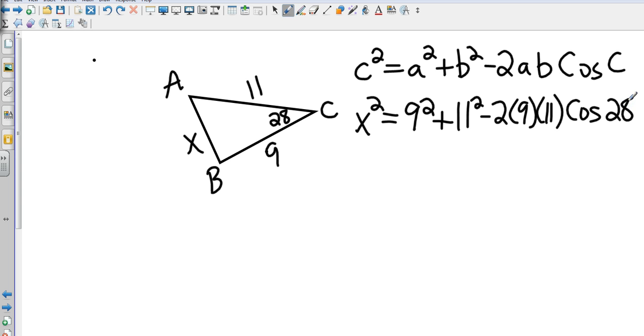So let's start filling in things that we know. Keep going. x² equals 81 plus 121. That's going to be negative 2 times 9, which is negative 18. And 18 times 11 is 198, so minus 198. I'm going to go ahead and find the cosine of 28 degrees. That's going to be 0.8829.